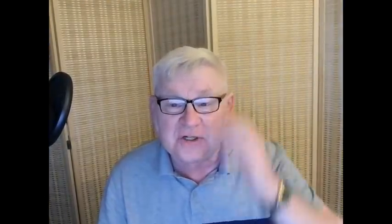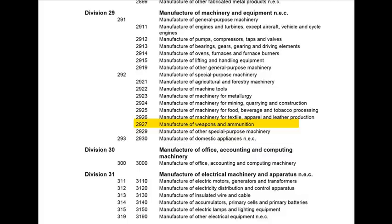ISIC Revision 3.1 gives a profound definition of what manufacturing covers under Division 15–37. But let me show you something: a subdivision of this 15–37 range — specifically Division 29 — and look at what is interestingly stated under subdivision 29-27.